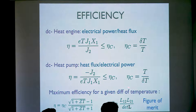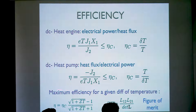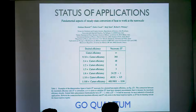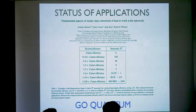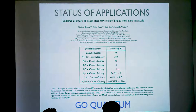If we fix the difference of temperature, it can be proved that the maximum efficiency is given by an expression parameterized by the so-called figure of merit, which is a combination of the transport coefficients previously defined. We see that the figure of merit has to be large in order to be close to the Carnot efficiency. This is nicely explained in a review by Giulio Casati, Keiji Saito, and Robert Whitney, where it is clearly stated that in order to achieve competitive performance of these thermal machines, we need the figure of merit to be of order three.